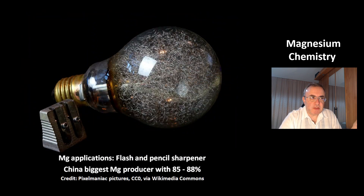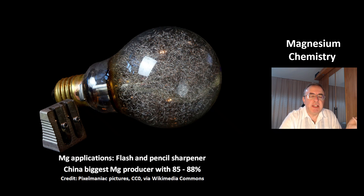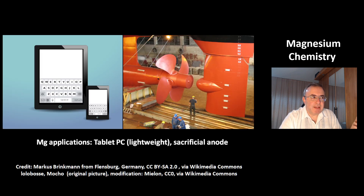These are two applications of magnesium in everyday life: a flashlight and a pencil sharpener. The biggest magnesium producer is China, with about 85–88%. Two more applications: at the left, magnesium for tablet PCs because it's lightweight, and at the right, part of a ship.